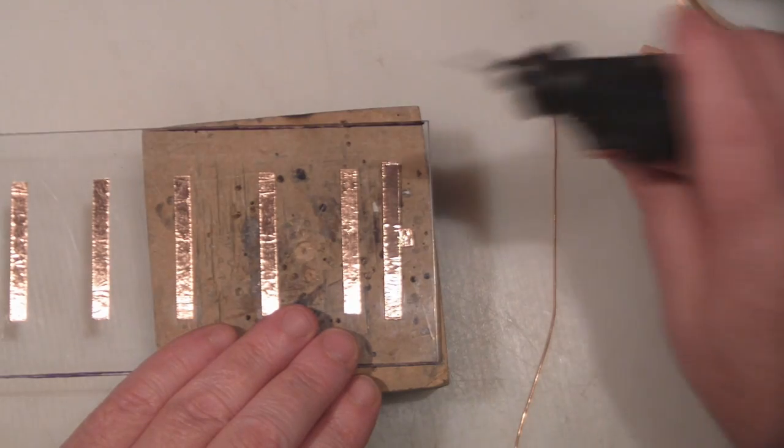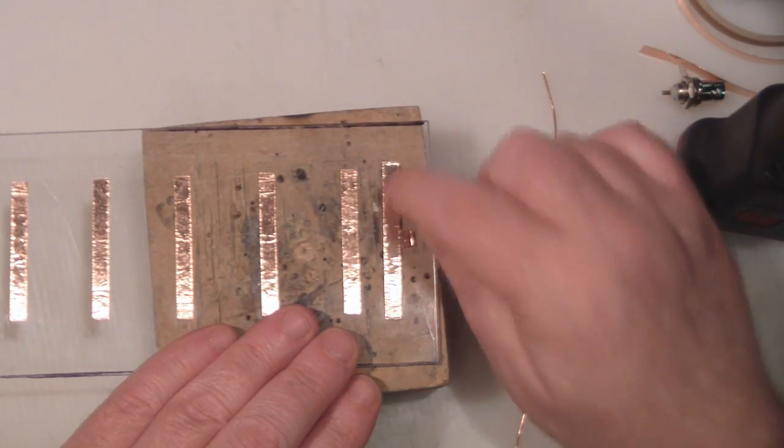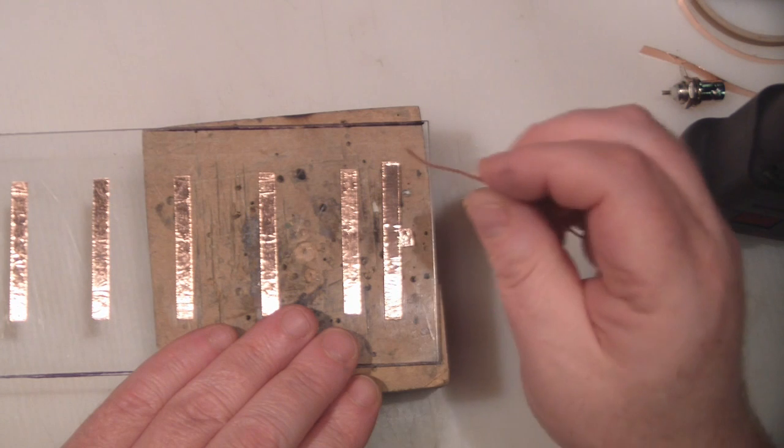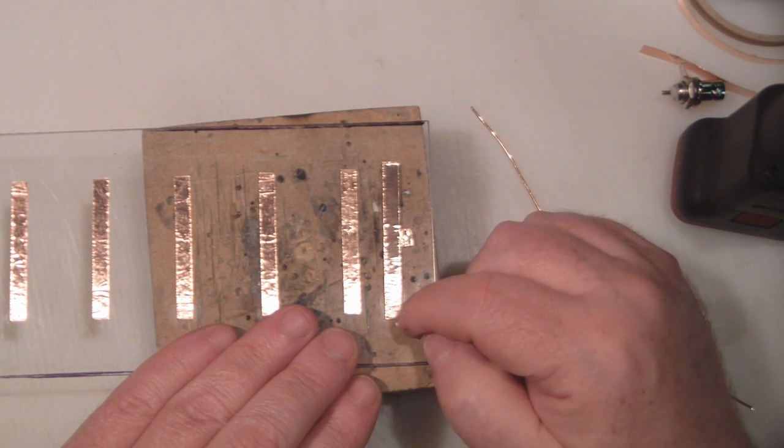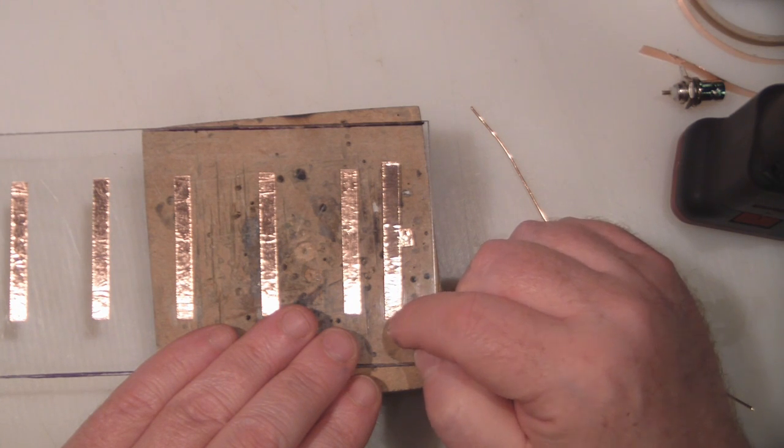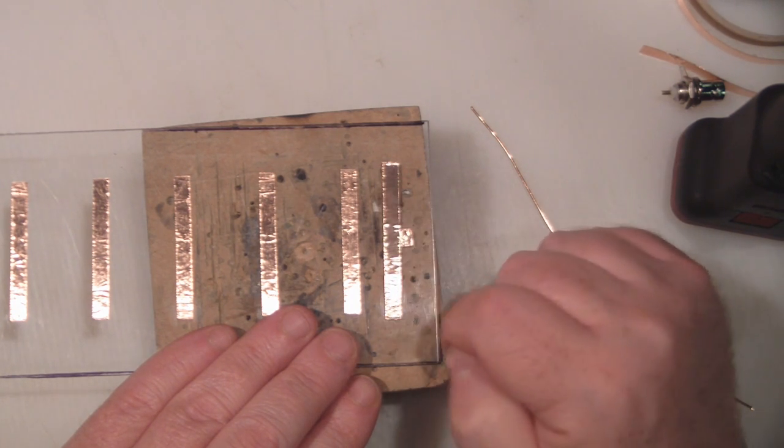So I'm going to take my Dremel and drill two small holes through, and then cut a tiny piece of copper here to create a via, and we'll connect them through the actual perspex itself.